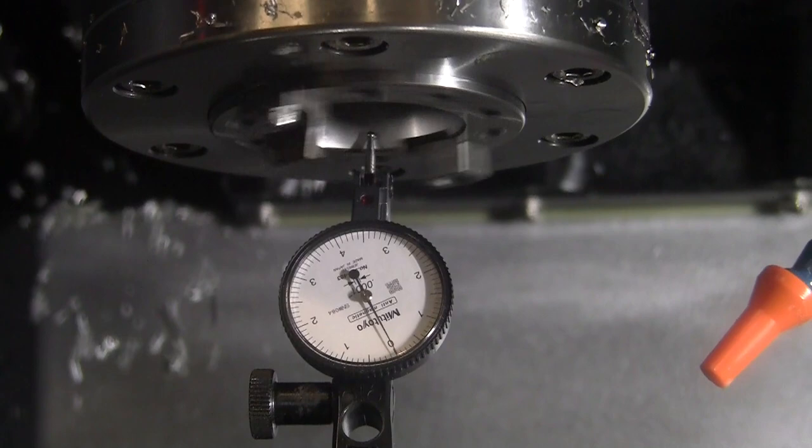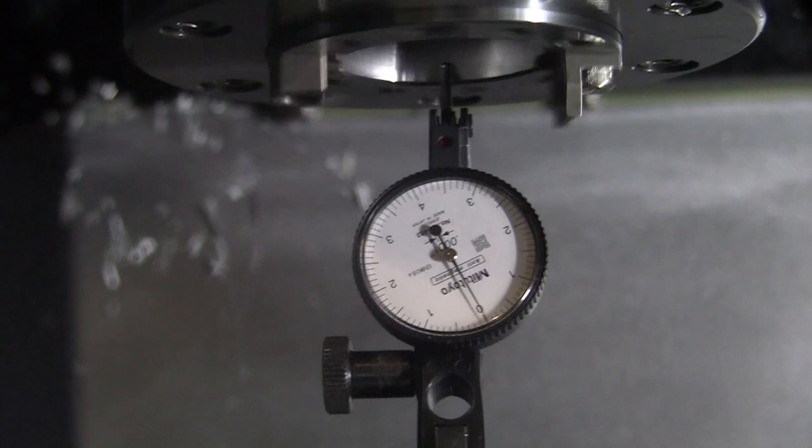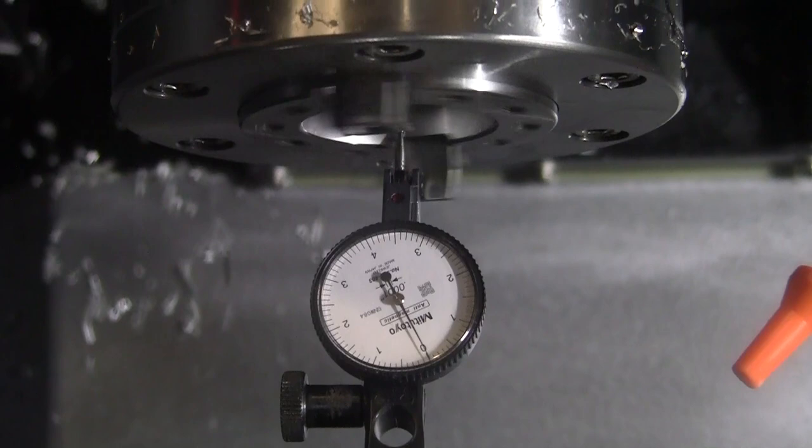Here you can see I'm measuring the runout of the spindle down by the nose of the spindle itself, and it looks like we're getting upwards of zero runout. You can see we are actually contacting. I was bumping the indicator so you could actually see that it is contacting.